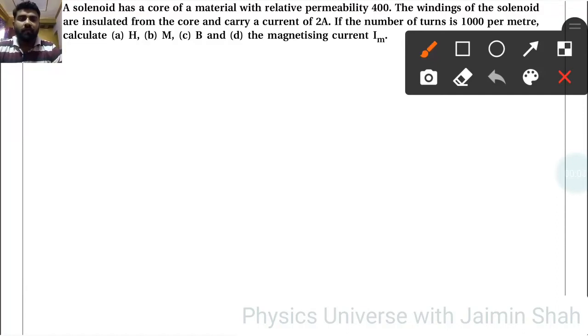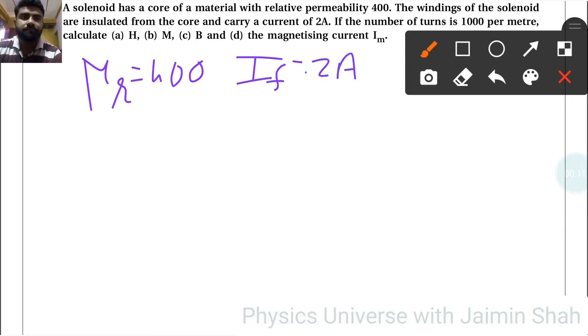A solenoid has a core of a material with relative permeability μᵣ = 400. The windings of the solenoid are insulated from the core and carry a current I = 2A. If the number of turns per meter n = 1000 m⁻¹, calculate: first H.